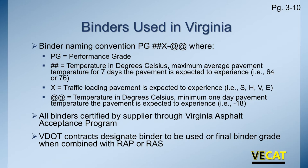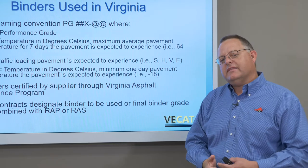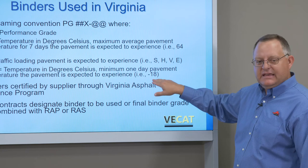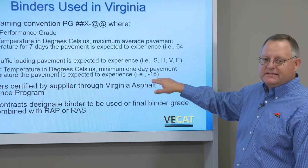What other binders do we use in Virginia? We use performance grading — we've followed what's known as the MSCR system. PG just means performance grade. The first number is the temperature in Celsius — maximum average pavement temperature for seven days, to make sure that if it's experiencing very hot temperatures for seven days, it won't rut. We also have the traffic loading designation: S, H, V, and E. This goes with the MSCR test done at the binder lab — S is the lowest truck traffic and E is extreme truck traffic. Then we have the minimum temperature, which is the minimum one-day pavement temperature expected, looked at for low-temperature cracking. Most of the middle of the state, based on the Superpave binder system, is minus 18 degrees C — we don't expect to see a day colder than that.